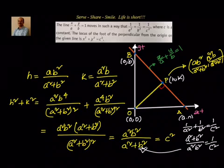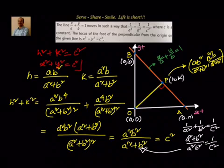We got h² + k² = c². For the locus, we replace h with x and k with y, giving x² + y² = c². That is the locus of the foot of perpendicular from the origin to the given line x/a + y/b = 1.